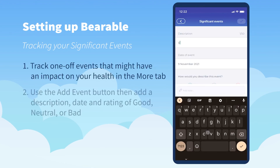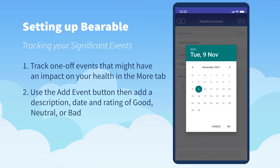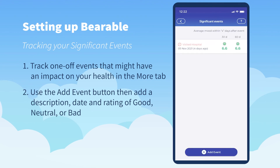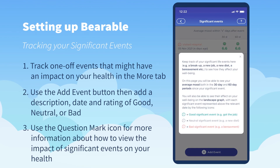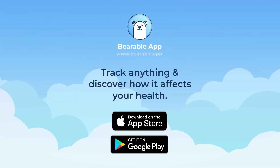One last thing is significant events. These are for one-off events that may have impacted your health. You add a description, enter the date, and score it good, neutral, or bad. This will sit as a standalone insight showing you the impact on your mood following this date. You can also click the question mark for more information about how this works, and view these in your comparison graph by rotating your phone in Insights.